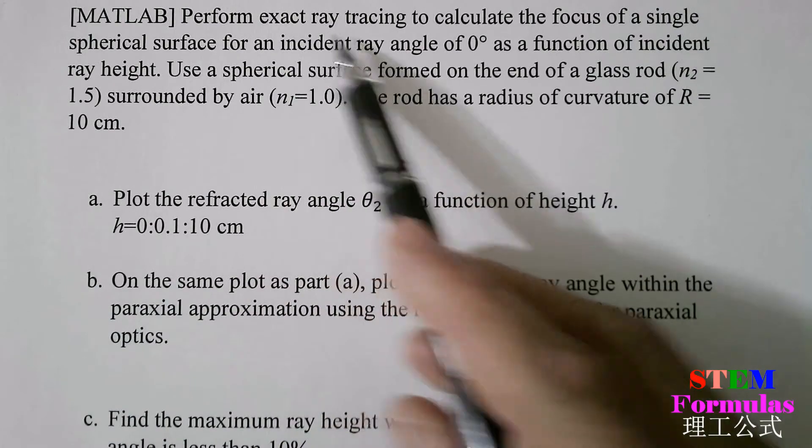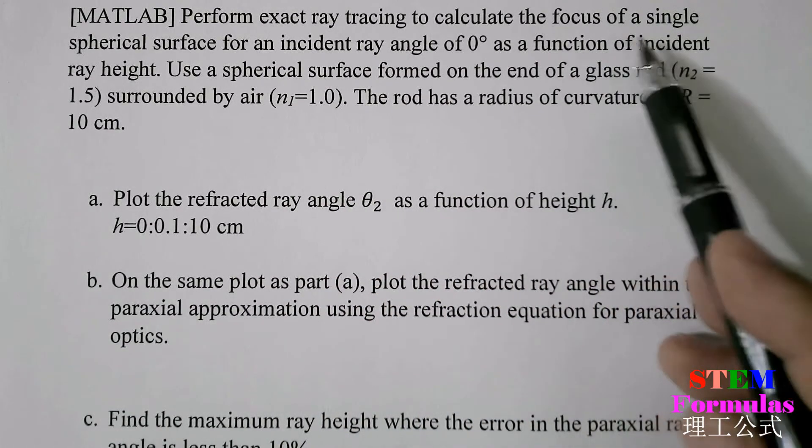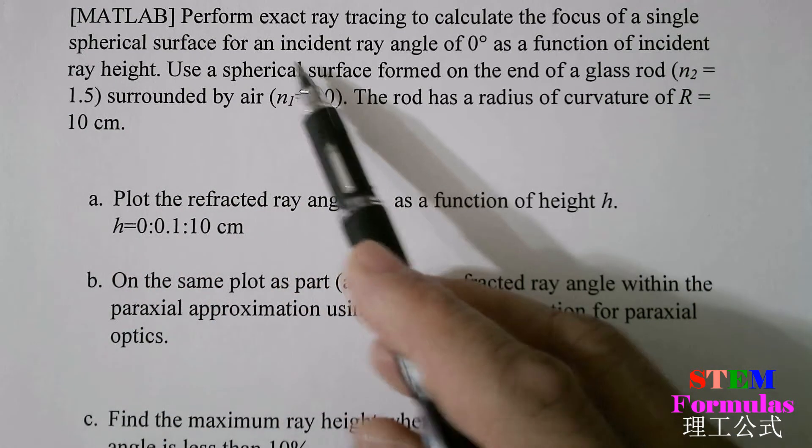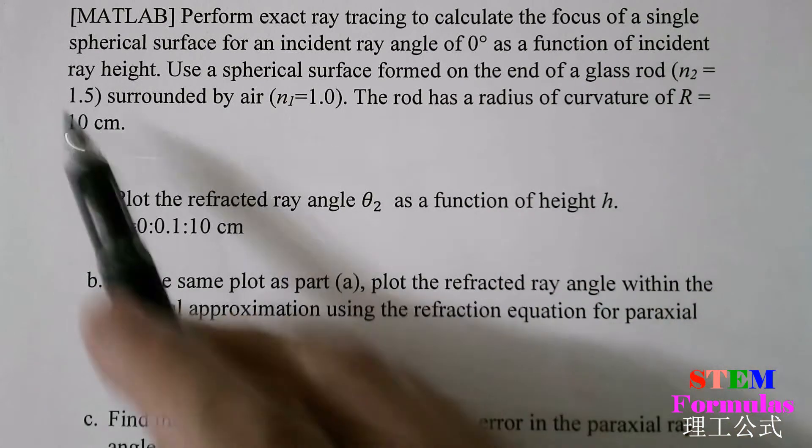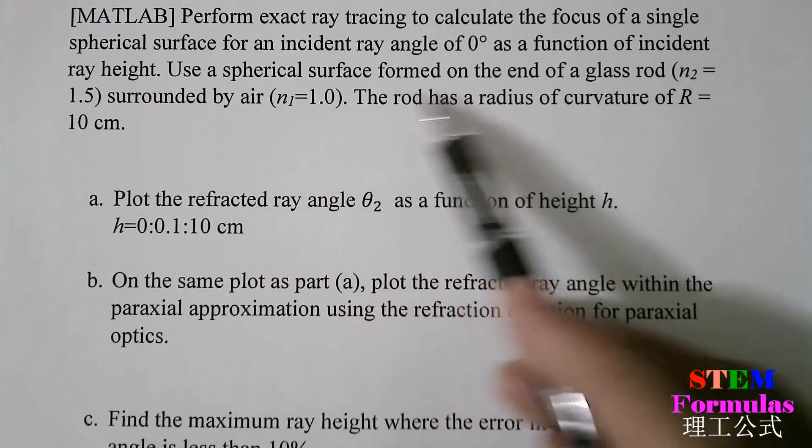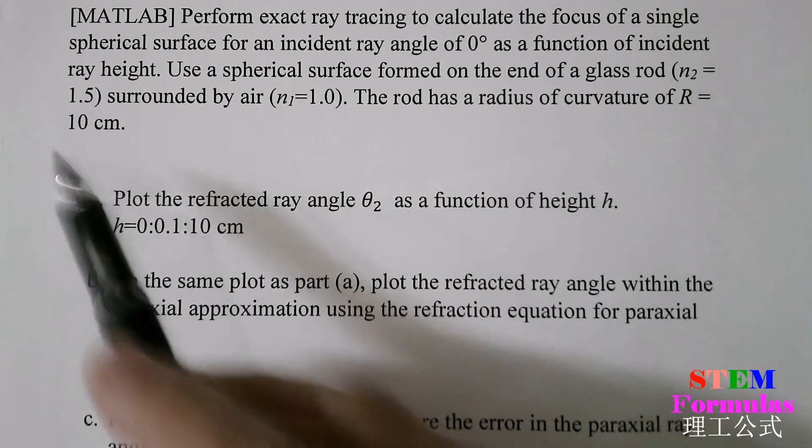Perform exact ray tracing to calculate the focus of a single spherical surface for an incident ray angle of θ₀ as a function of incident ray height. Use a spherical surface formed on the end of a glass rod, N₂ equal to 1.5.